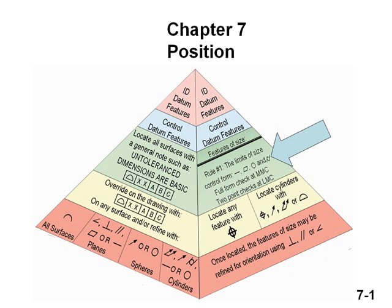If the feature of size is a cylinder and is coaxial to a datum axis, we will see in the next chapter that there are several ways to control the location. This chapter shows how to locate these features of size using the position tolerance.